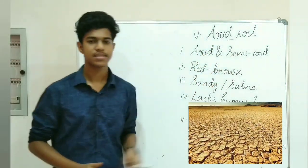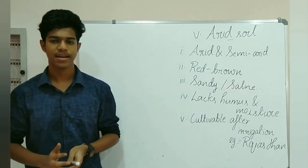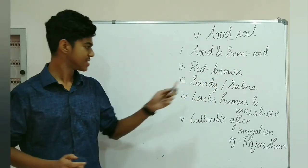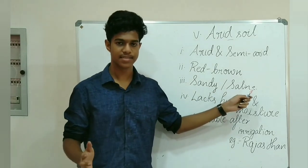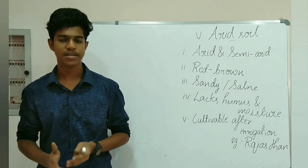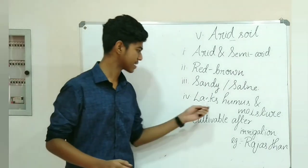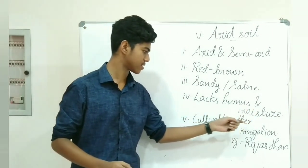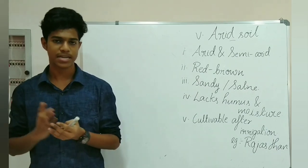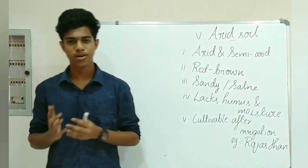The next soil is arid soil. Arid soil is found in arid and semi-arid parts of our country and it ranges from red to brown in color. It is sandy in texture and saline in nature, meaning the soil has a high quantity of salt. Due to dry climate and high temperature, evaporation is faster and the soil lacks humus and moisture. Even so, it is suitable for cultivation after proper irrigation.